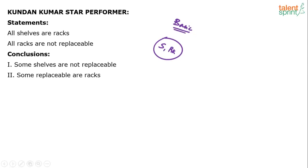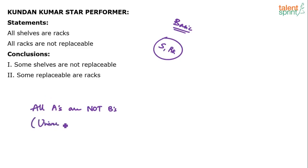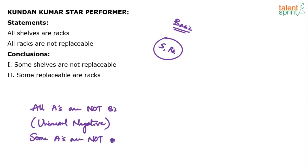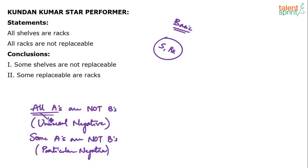All shells are racks, and all racks are not replaceable. Now, 'all racks are not replaceable' is called a universal negative statement — all A's are not B's. Compare this with the particular negative statement: some A's are not B's, which we have discussed in our previous videos.